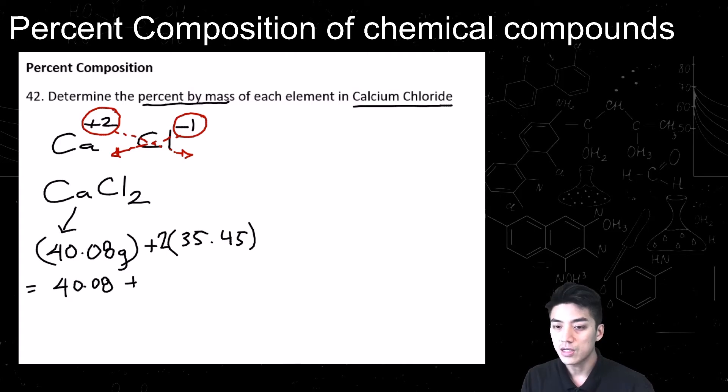40.08 plus, and chlorine contributes 70.9. So our total mass for this compound is 110.98 grams per mole.